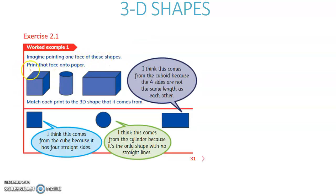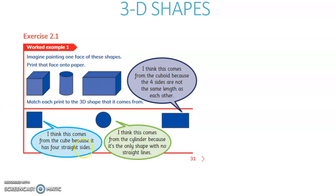Imagine painting one face of these shapes and printing that face onto paper. Here again, we are matching. We have to match these face prints to the 3D shapes. I think this comes from the cube because it has 4 straight edges. I think this comes from the cylinder because it is the only shape with no straight lines. This is a part of the cuboid because not all sides are of the same length — the 4 sides are not the same length as each other.